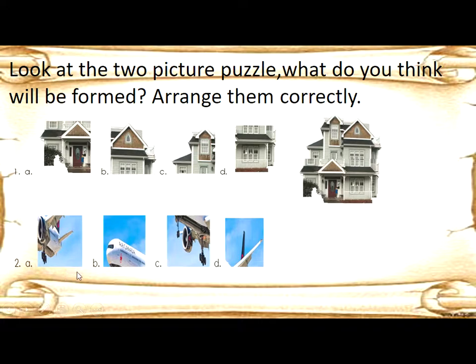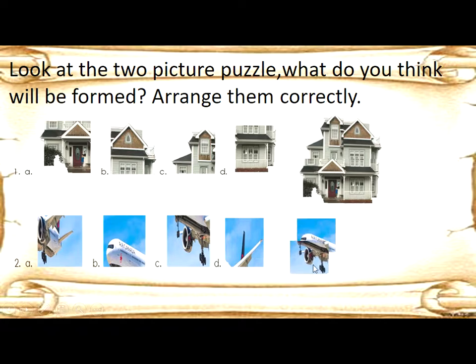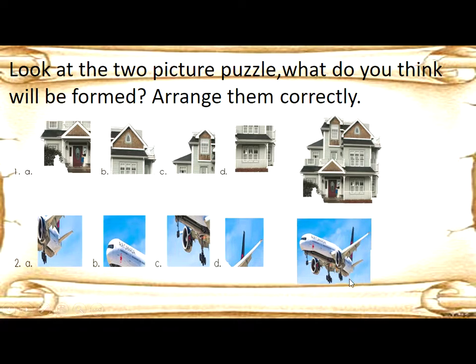Number two. The letters are B, C, D, and A. This is an airplane.